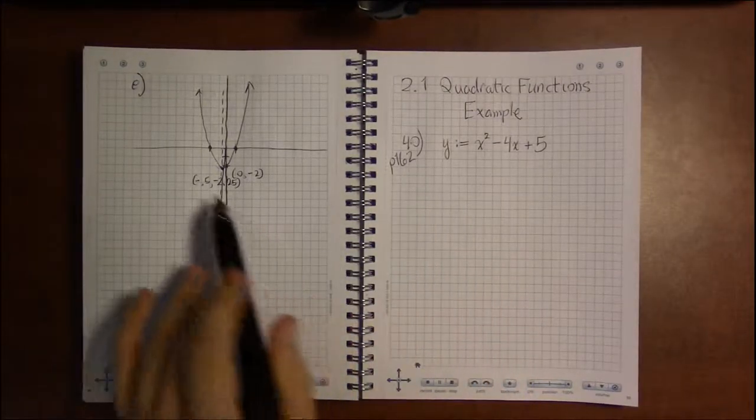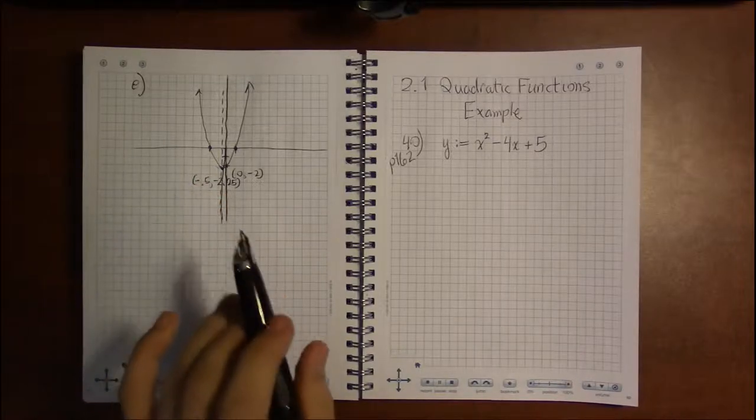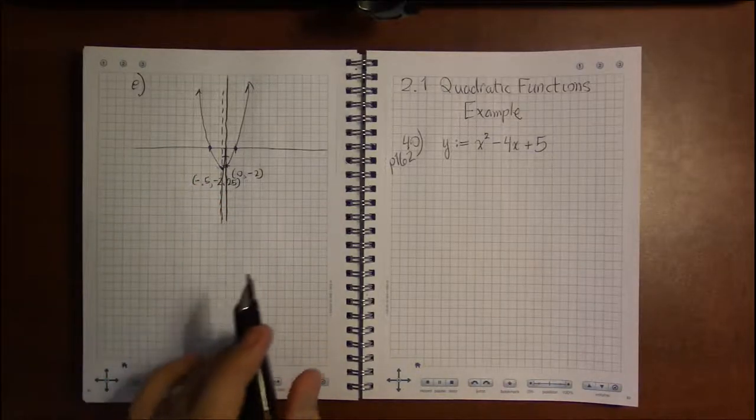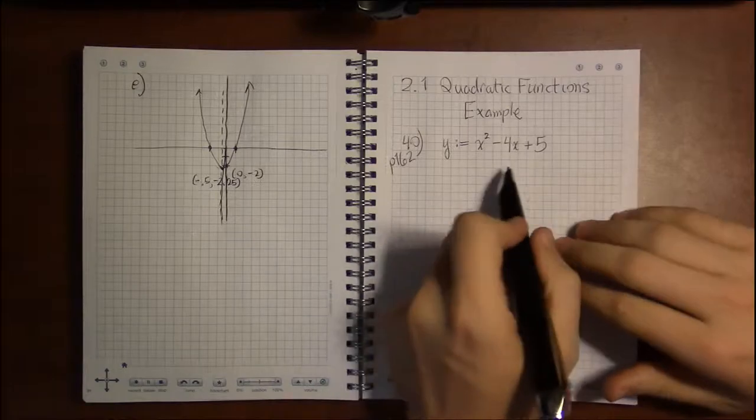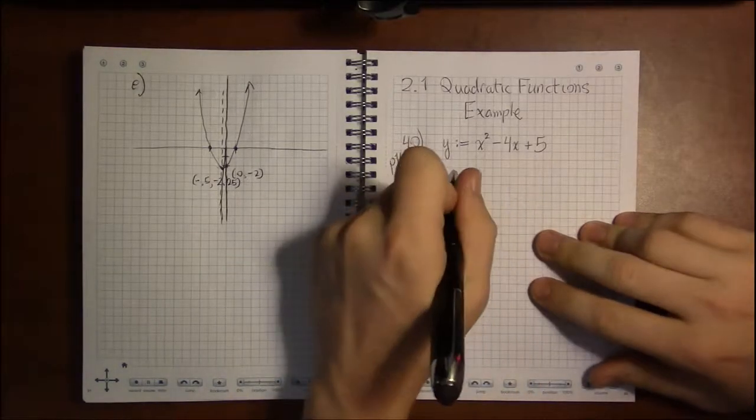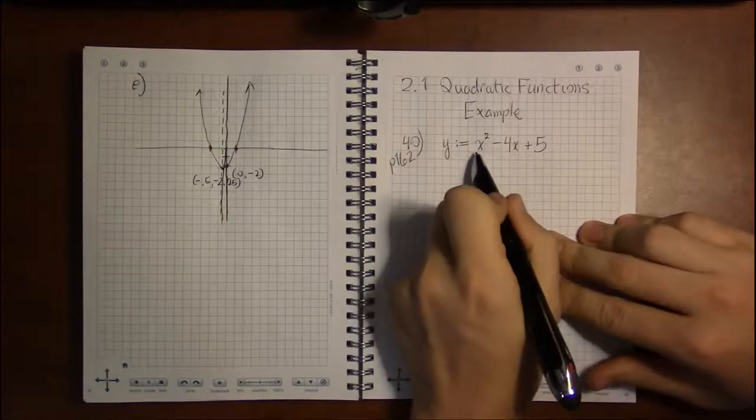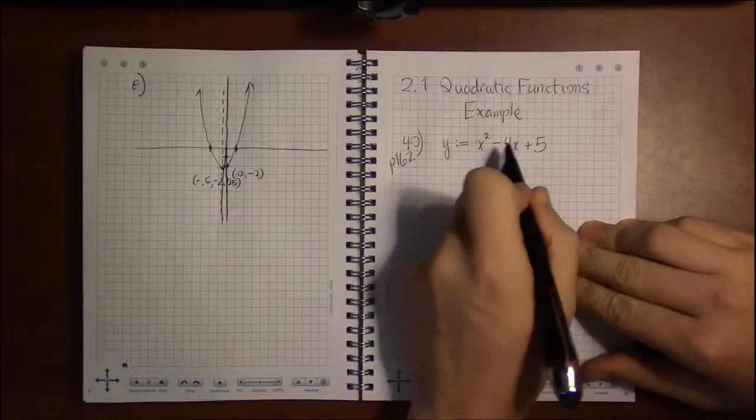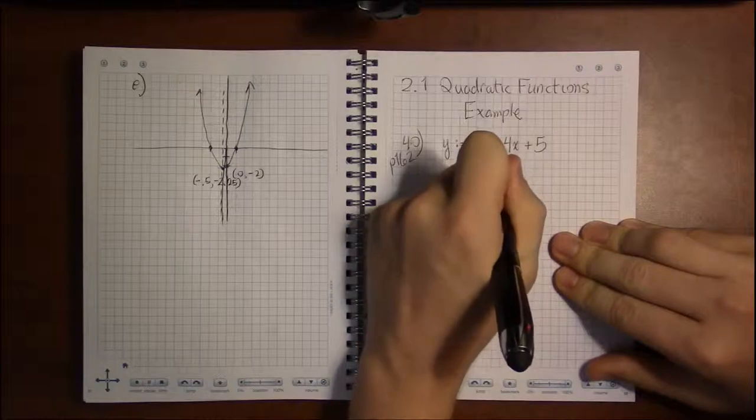Alright, continuing with a similar example as we did in the last video. Here's our quadratic in standard form. We're going to need to know what a is throughout this. B is pretty clearly minus 4.